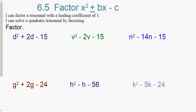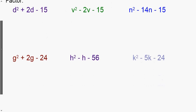Today we are talking about section 6.5: factor x² ± bx - c. This section is really similar to section 6.4. The only difference is that in 6.4 c was always positive, while in 6.5 c will be negative. The learning targets are the same: I can factor a trinomial with a leading coefficient of one, and I can solve by factoring.